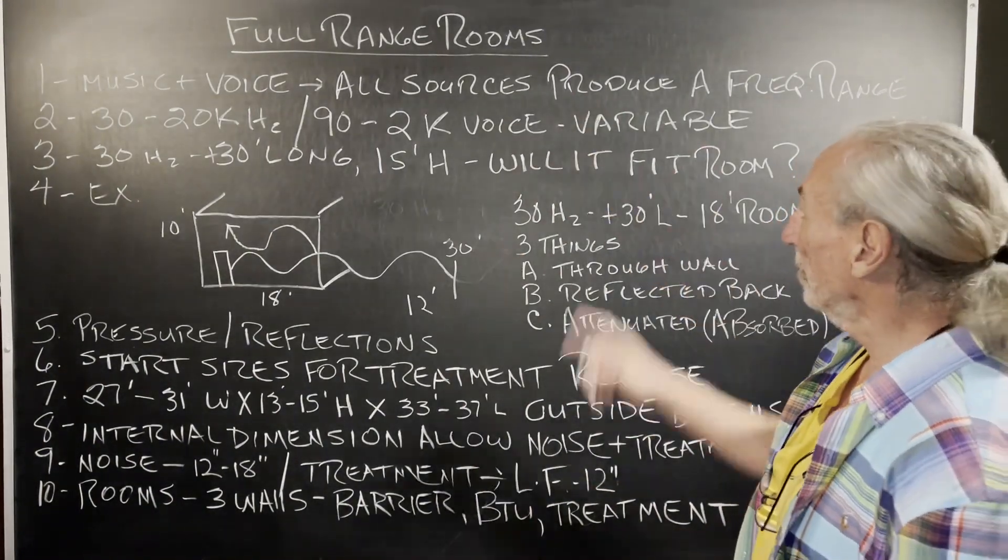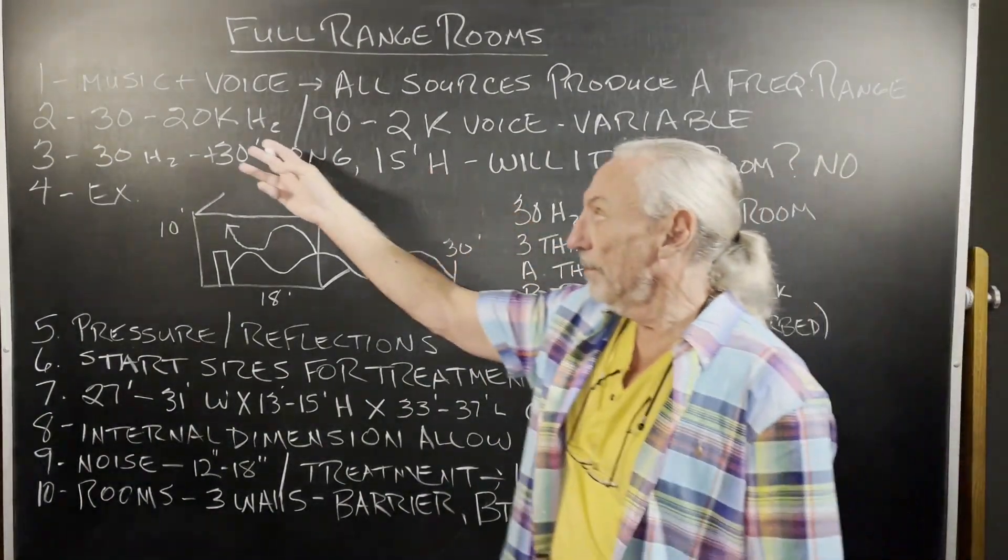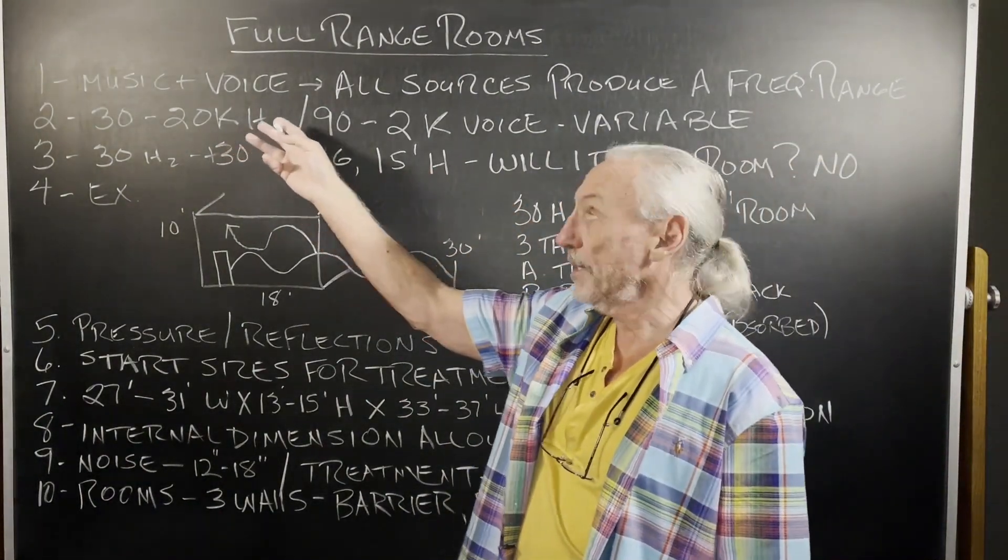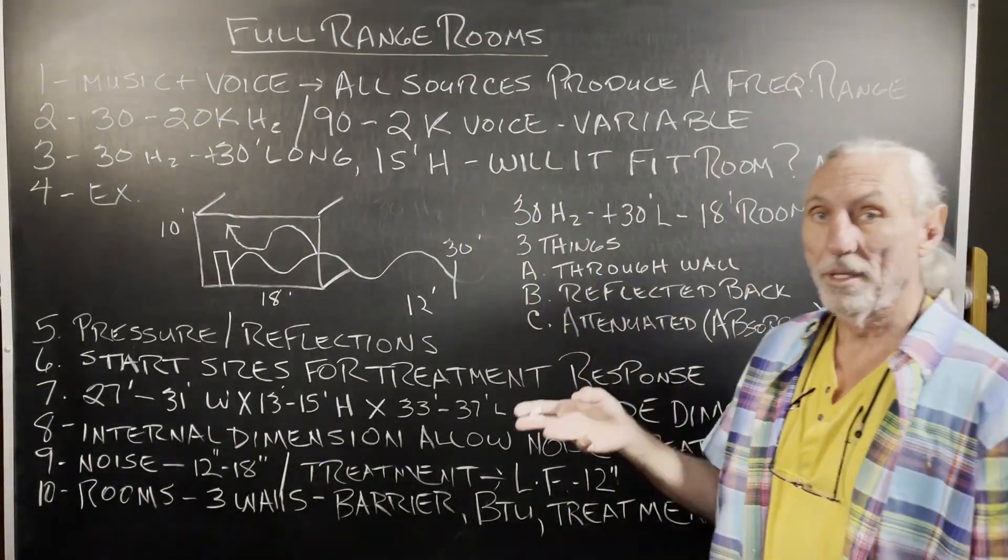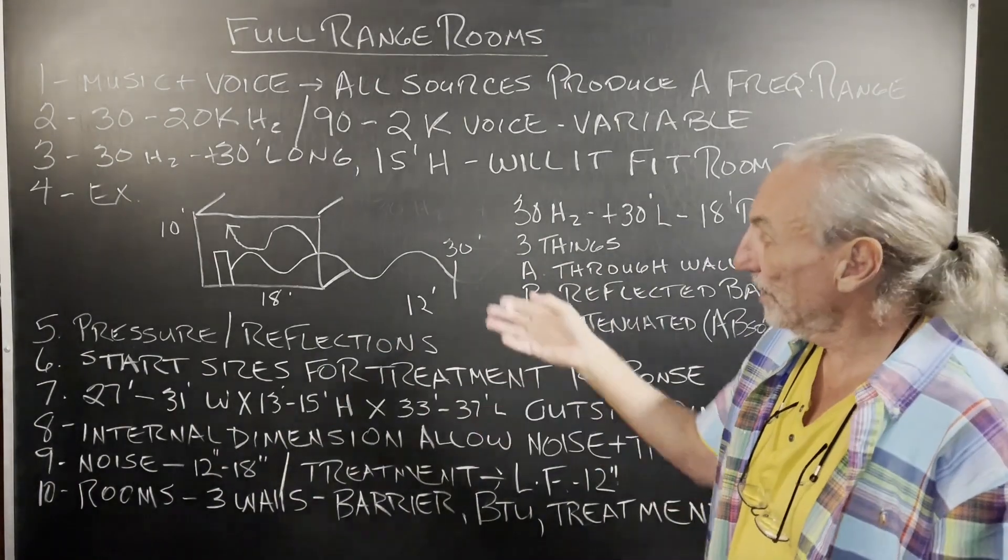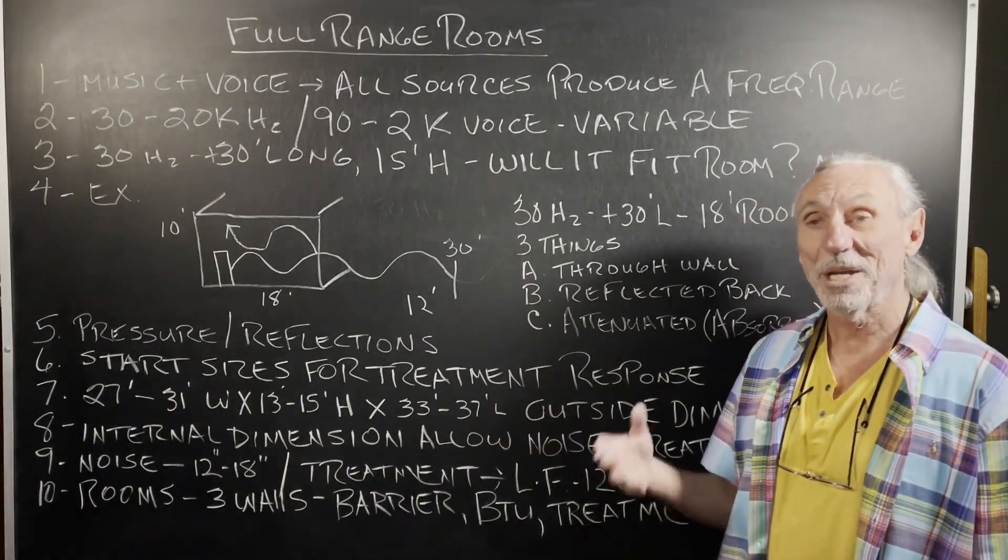Music and voice, all sources produce a frequency range. Most music, 30 to 20k Hz, 40 to 20k Hz. Voice, 90 to 2k. It's variable. But the goal here is that it has to fit into the room, right? The best sound I always say is no room. Get rid of the room.